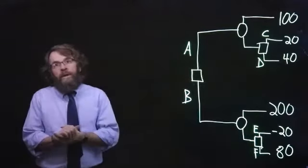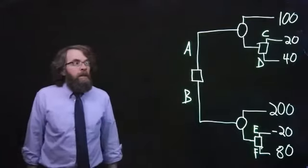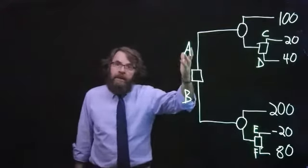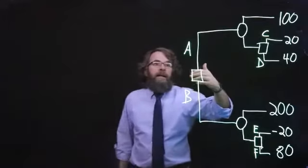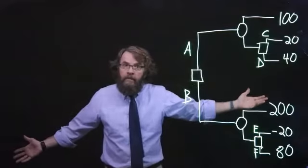In this video, we will be considering a fairly simple decision tree here. We have an initial decision to make, either A or B, and then after that decision, a random event occurs.